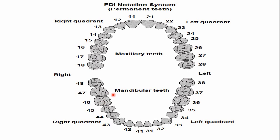In the FDI notation system, the permanent mandibular first molars are designated as 36 and 46. The number 36 — three indicates the left mandibular quadrant, and six indicates the tooth number, so it is pronounced as 'three six,' meaning the mandibular permanent first molar of the left side. For the right side, the number is 46 — four indicating the right mandibular quadrant and six the tooth number, pronounced 'four six.'